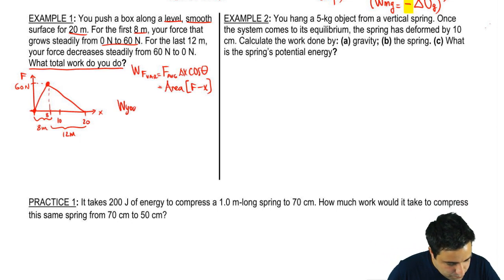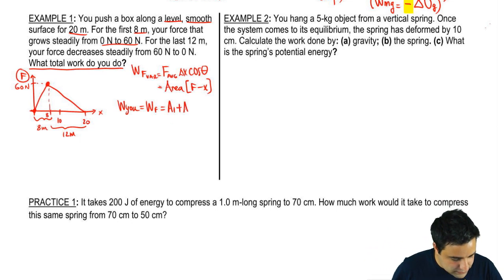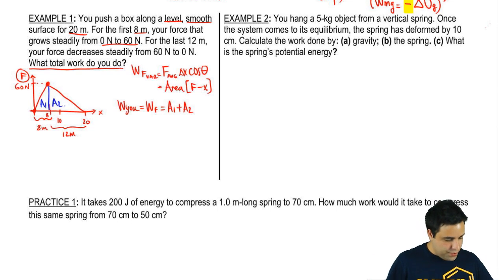So the work done by you, you're pushing, so it's the work done by this f over here that we're describing. And I can do this by finding the area under the graph. Now, in this case, because I have two little triangles, two different areas, I'm just going to do A1 plus A2. This is A1, and this is A2 right here.